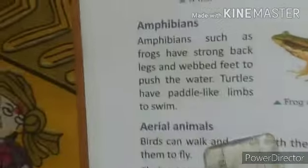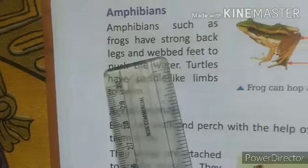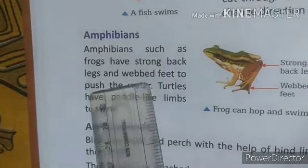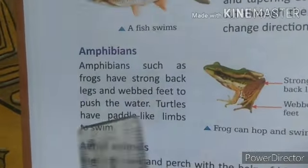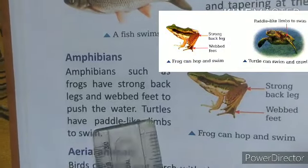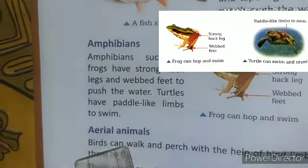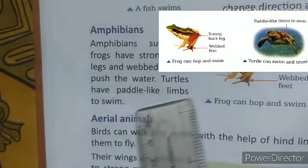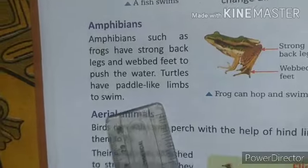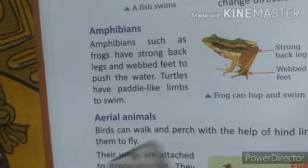Now, amphibians. Frogs are amphibians. They have back legs and webbed feet to push through water. Turtles are also amphibians. They have paddle-like limbs to swim.